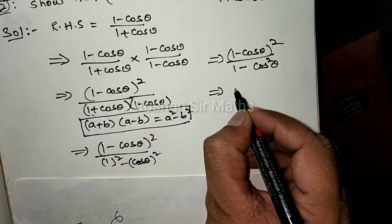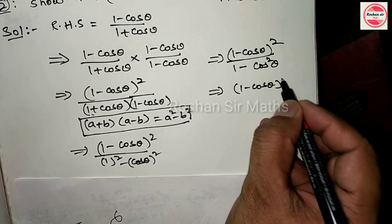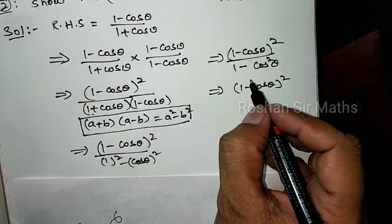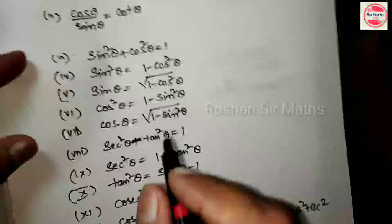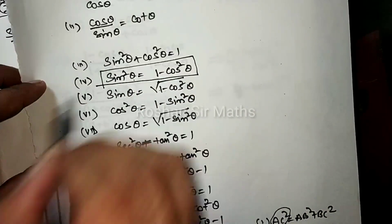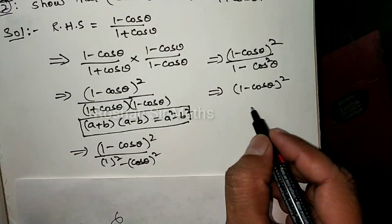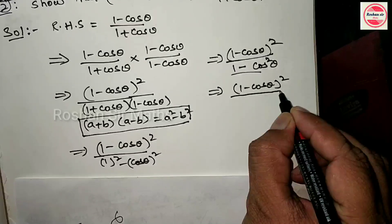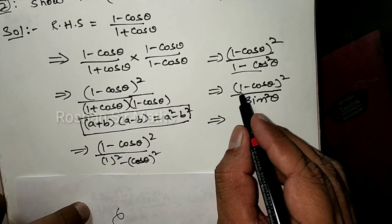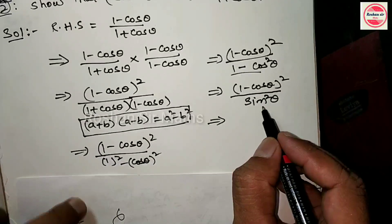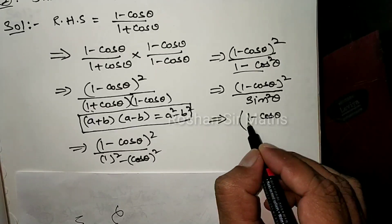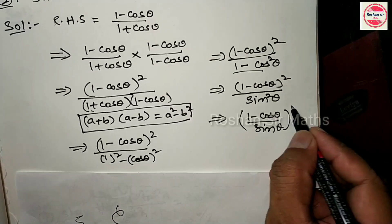Numerator as it is: (1 minus cos theta) whole square। इसकी identity हम लोग already लिख चुके हैं। Identity: 1 minus cos square theta = sin square theta। तो denominator की जगह sin square theta लिखेंगे। अब (1 minus cos theta) whole square और sin square theta दोनों square में हैं, तब हम लोग एक bracket में लिखेंगे: [(1 minus cos theta) by sin theta] whole square।